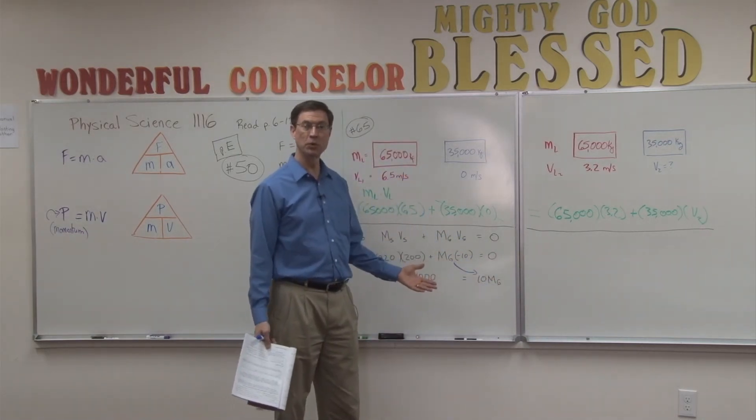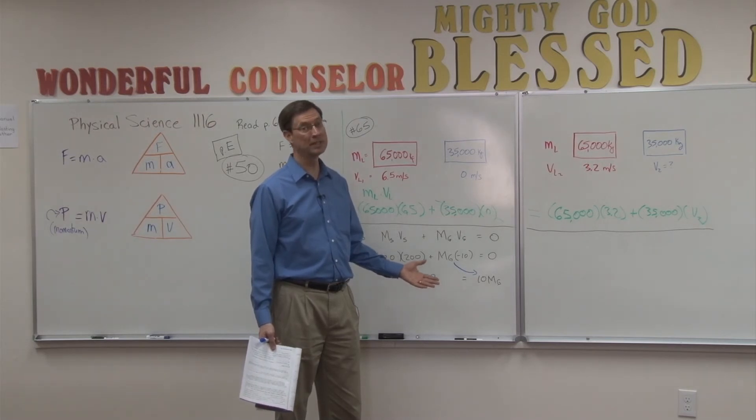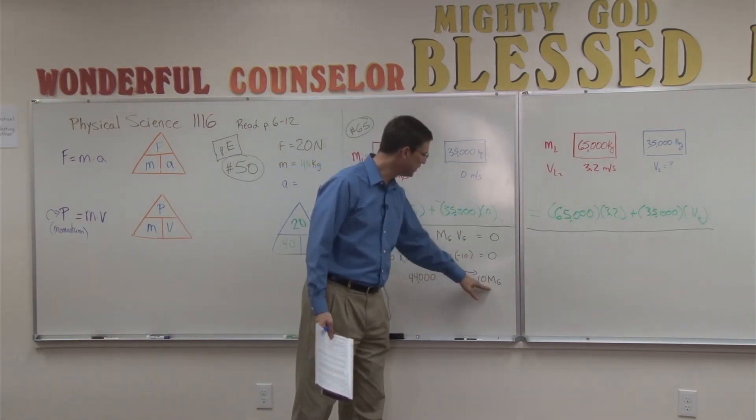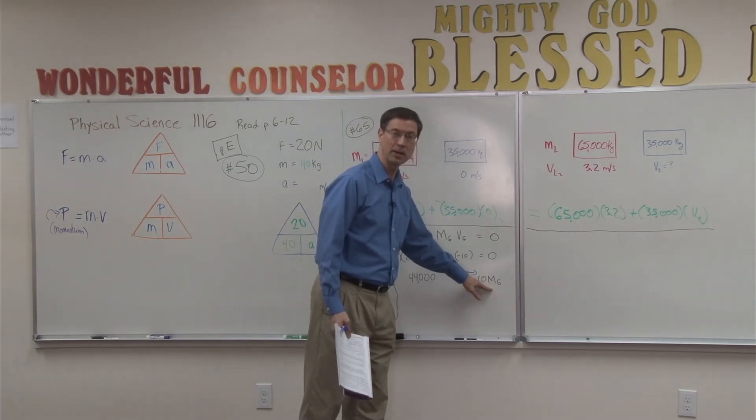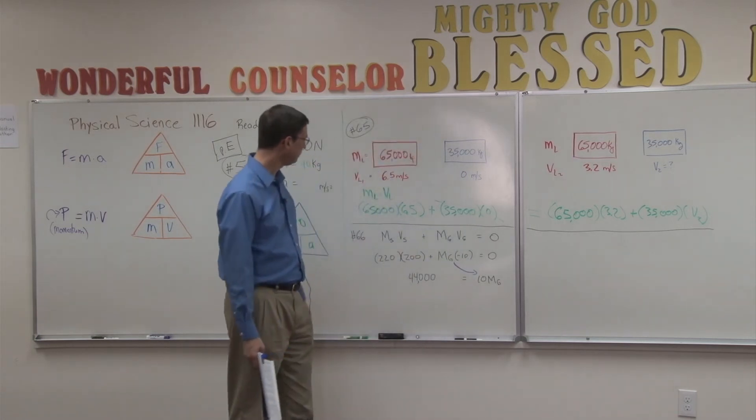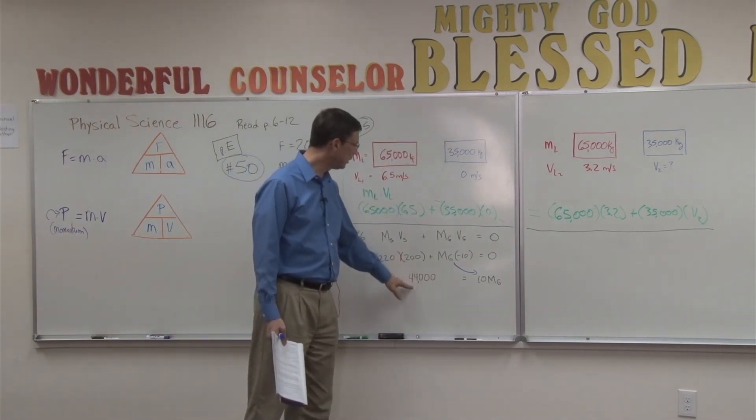Because as soon as I do it, you know the old saying in algebra, switch sides, switch signs. So I switch sides, negative 10 mg now becomes positive 10 mg on the other side of the equal sign. Go ahead and multiply these two together, which I did.